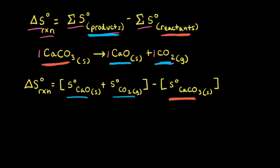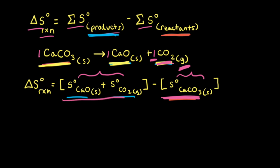Before plugging in values, let's predict the sign of the standard entropy change. In this reaction we go from one mole of a solid to one mole of a solid and one mole of a gas. Since gases have much higher entropy than solids, and we go from zero moles of gas on the reactant side to one mole of gas on the product side, we predict the sum of the products' entropies will exceed the reactants', giving a positive standard entropy change.